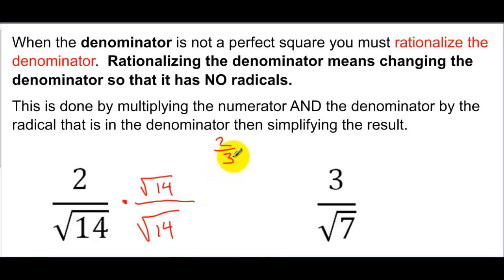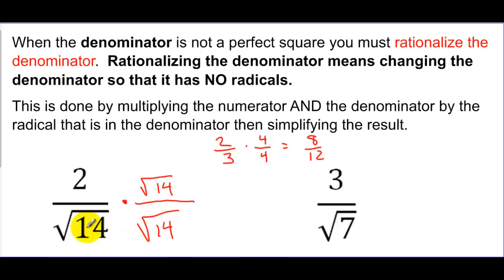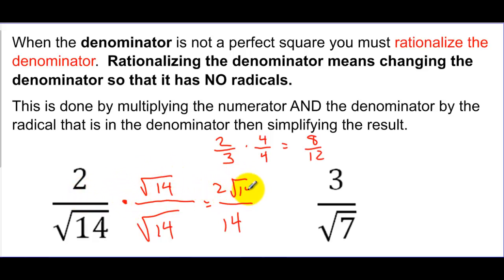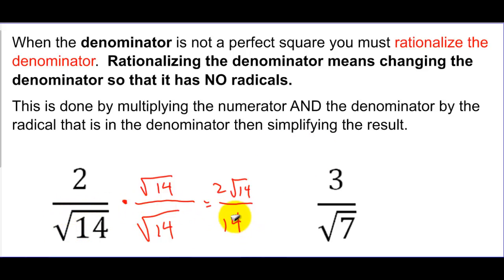In this first example, the only problem is that I have a radical in the denominator — the square root of 14. I'm going to multiply the numerator and the denominator by the square root of 14 to fix it. If you do square root of 14 times square root of 14, the answer is just 14. On the top, 2 times the square root of 14 stays as 2 square root of 14, since I can't multiply something outside a radical with something inside. So we've gotten rid of the radical in the bottom of the fraction — the square root of 14 is now just a regular 14.